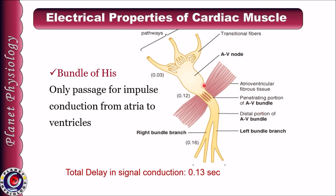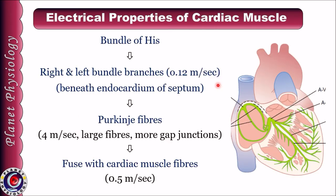From the AV node, impulses are conducted to the bundle of His, which is the only passage for impulse conduction from atria to ventricles, as these two structures are separated by non-conducting fibrous tissue. From the bundle of His, impulses travel through the right and left bundle branches located beneath the endocardial surface of the interventricular septum, and then to the Purkinje fibers. Purkinje fibers are larger fibers and possess more gap junctions, giving them maximum conduction velocity of 4 meters per second. Purkinje fibers fuse with ventricular muscle fibers and transmit signals so that both ventricles contract simultaneously, which is essential for proper pumping of blood.